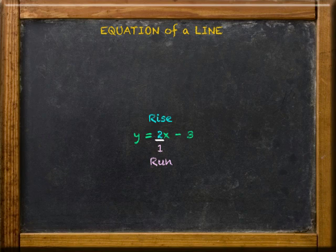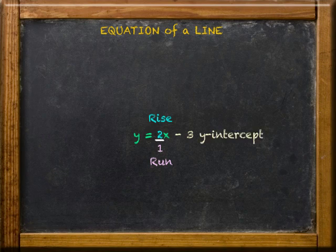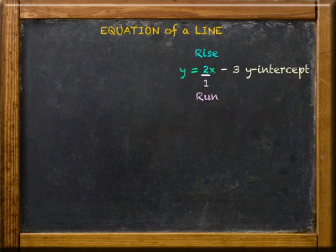The other number in the equation, the constant, in this case negative 3, is the y-intercept. That's where the line crosses the y-axis.